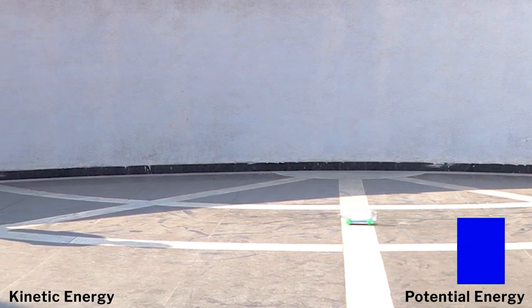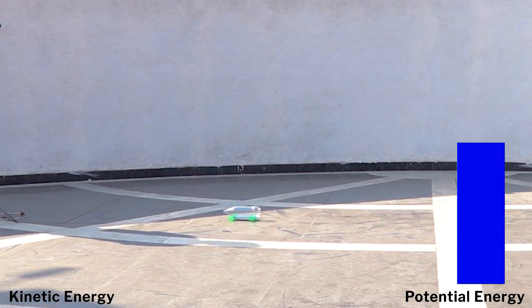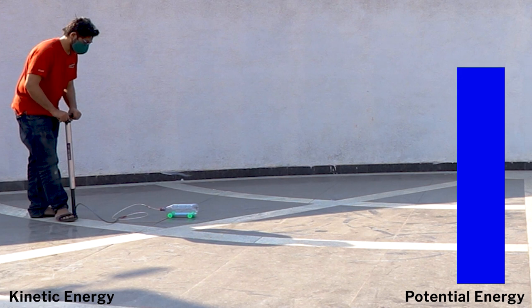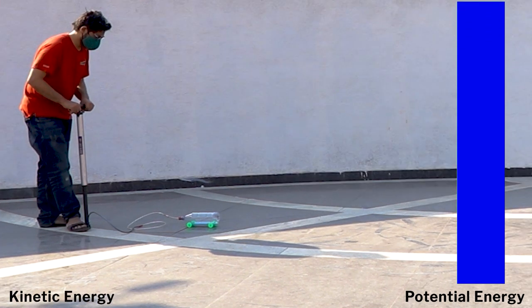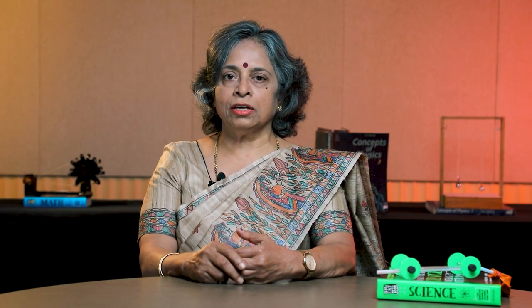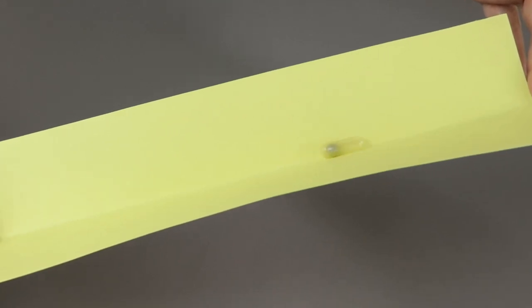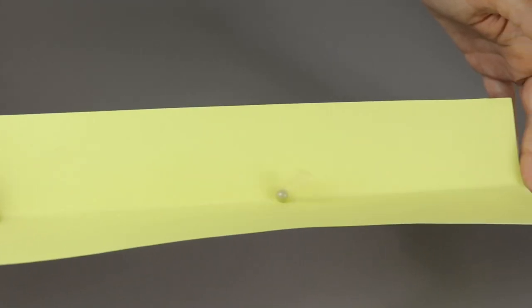Let us rewind to before the bottle was released. At that point, the bottle has potential energy that will be converted into work. Now, since we have introduced the topics of work, kinetic energy, and potential energy, we can ask the same question once again to the students: is the capsule doing work? And have a discussion on it.